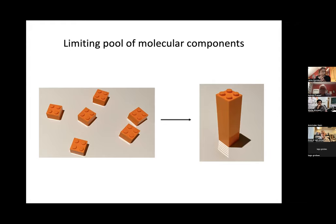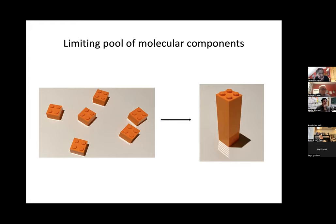The idea couldn't be simpler. I'm showing the model with Lego blocks: if you want to assemble a linear structure — say a tower of five Lego blocks — all you have to do is make five Legos and let them come together so they stack on top of each other, and you'll get a tower of five. If you express six Legos, you get a tower of six. That's the crux of the idea — it's called the limiting pool mechanism. It's been proposed not just for nucleoli but also for centrosomes and even nuclei.